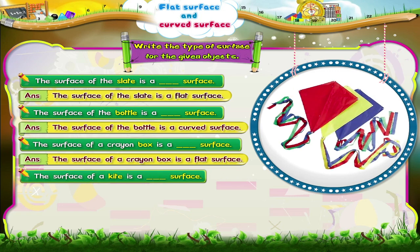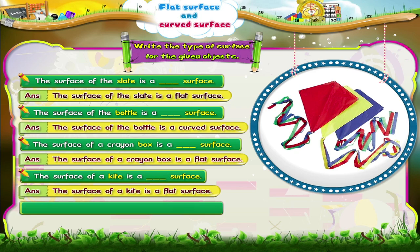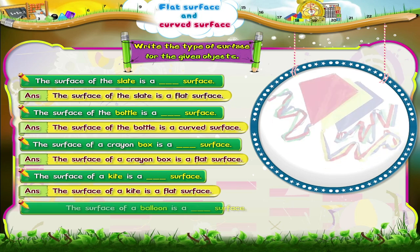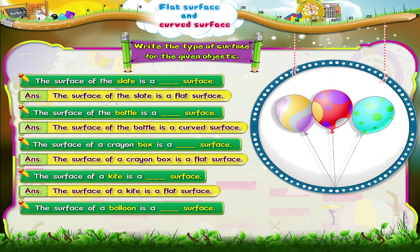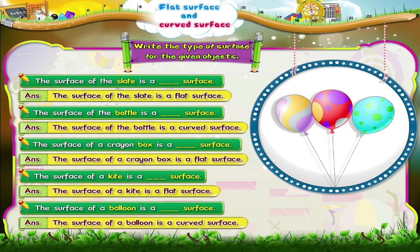The surface of a kite is a flat surface. The surface of a balloon is a curved surface.